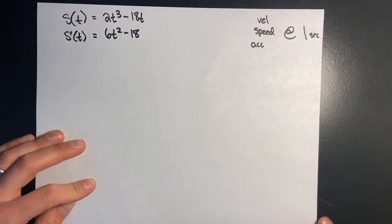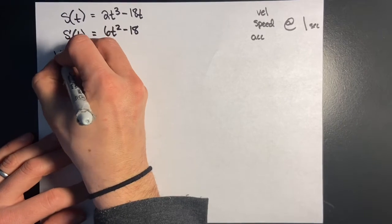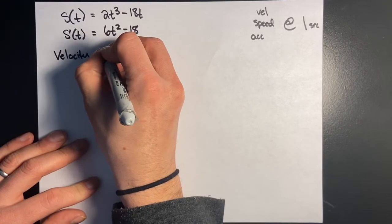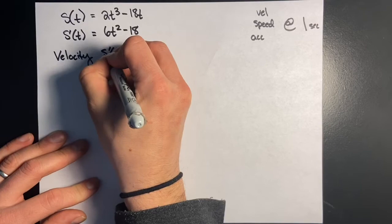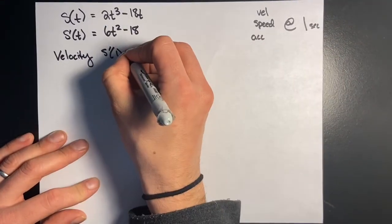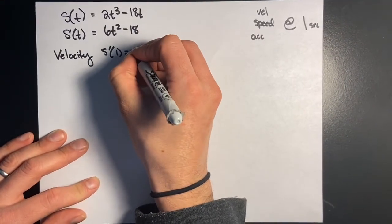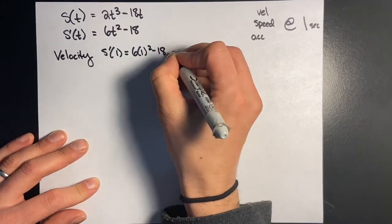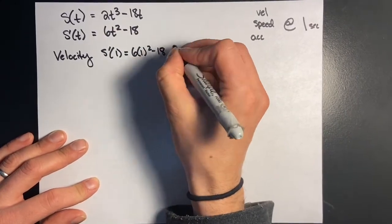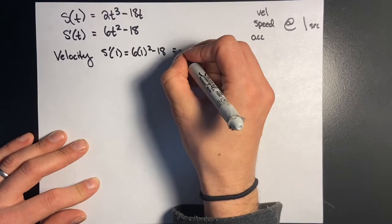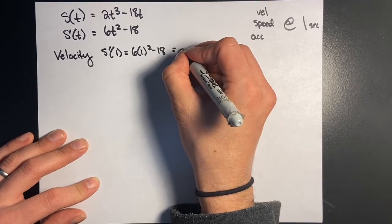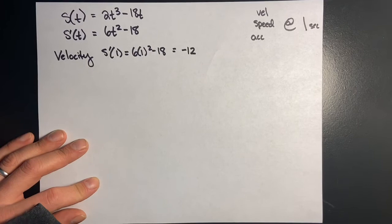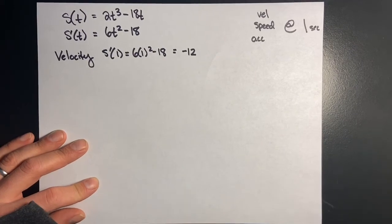To find the velocity at one second, I evaluate s'(1): that equals 6 times 1 squared minus 18, which is 6 minus 18, giving me negative 12 meters per second. That's my velocity.